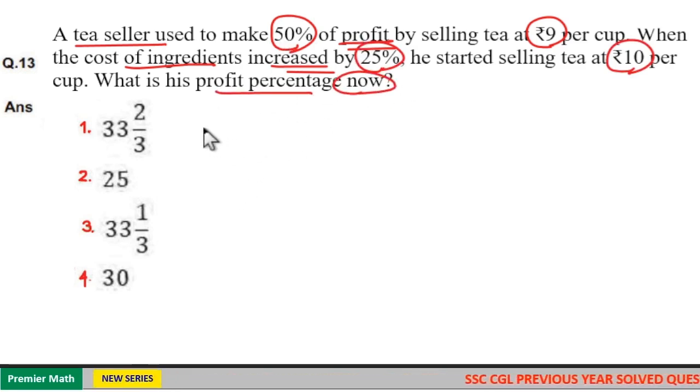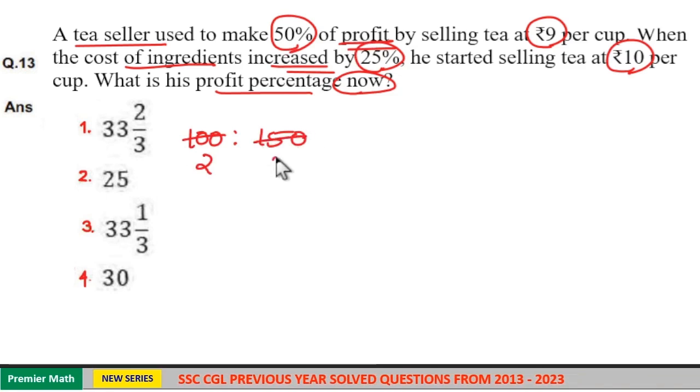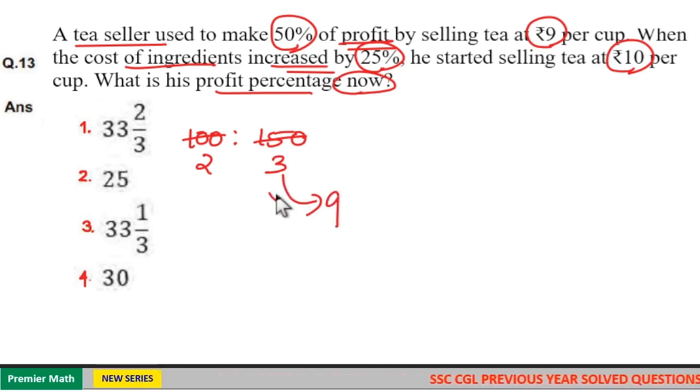Profit is 50 percent means if 100 rupees is the cost price, 100 plus 50, 150 rupees is the selling price. 50 goes two times in 100, 50 goes three times in 150. But here selling price is given as 9 per cup, so selling price is 9 means 3 into 3 is 9, so cost price is equal to 2 into 3, 6 rupees.